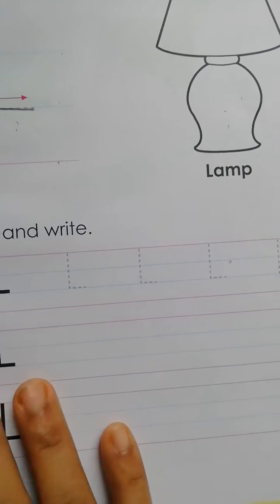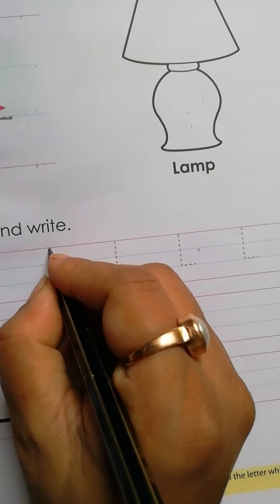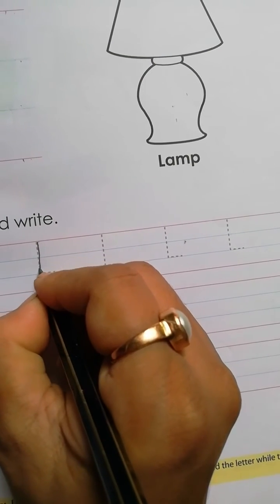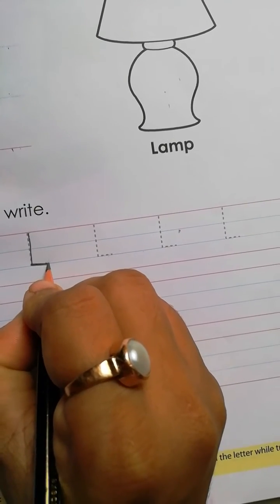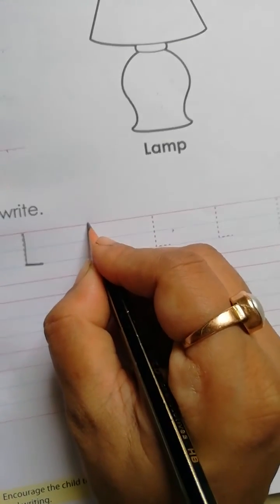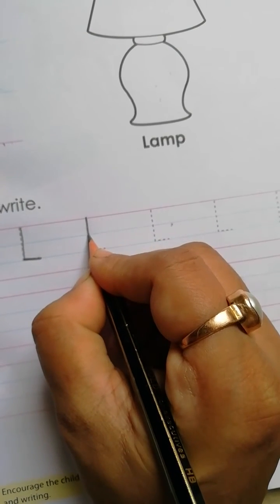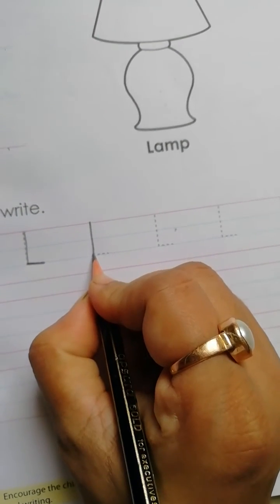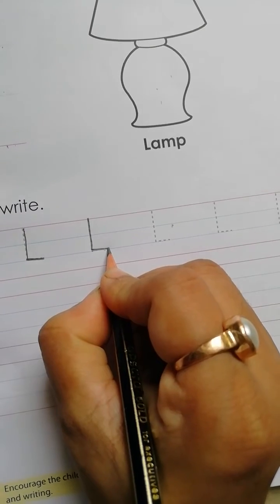Again we have to trace. Red line, to second blue line, standing line, then slipping line. Again we have to trace. Red line, to second blue line, standing line, then slipping line.